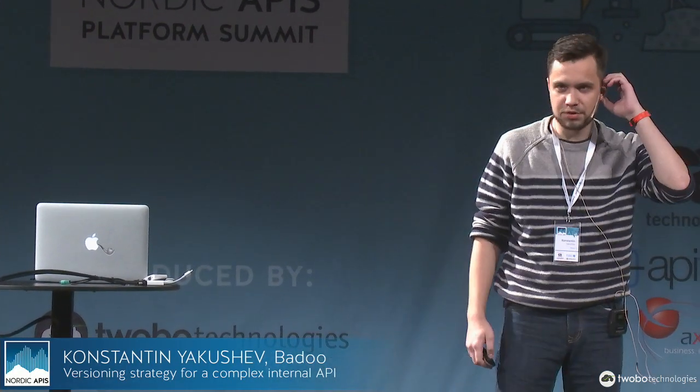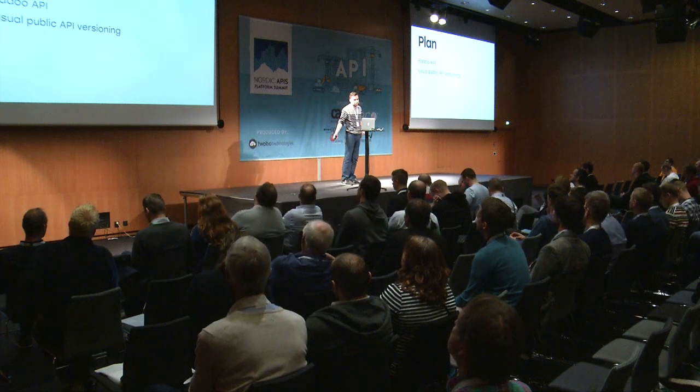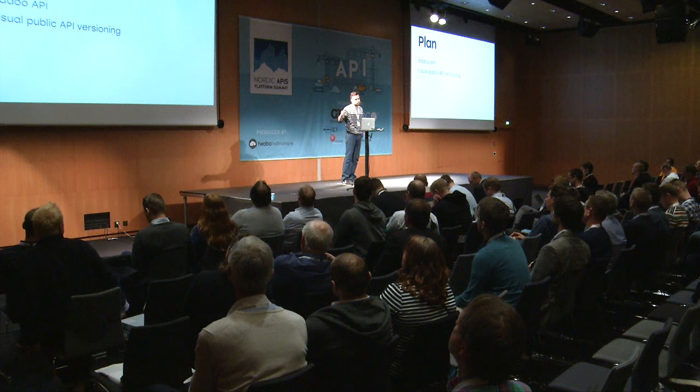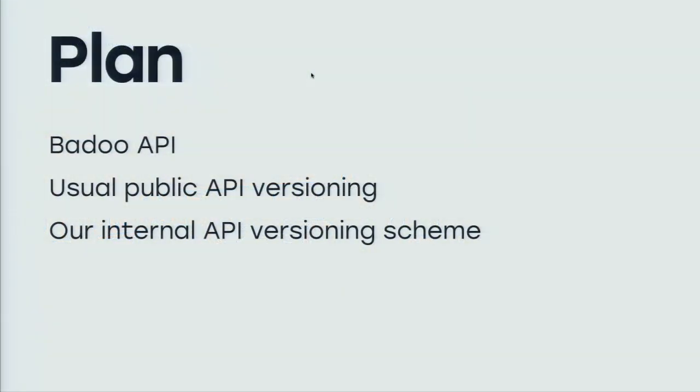Hi everyone. I'm glad to be here to speak to you again. This is a presentation about versioning. My name is Konstantin, almost like in the movie. I did talk about a few APIs, mostly in Russian, but I did talk about the 2014 one here — a talk about partner APIs and the constraints and ideas around them. Today I'm talking about an internal API at Badoo. I'll cover what kind of API we have, versioning as it's usually done, versioning as we do it — which is much better — and some practical considerations.